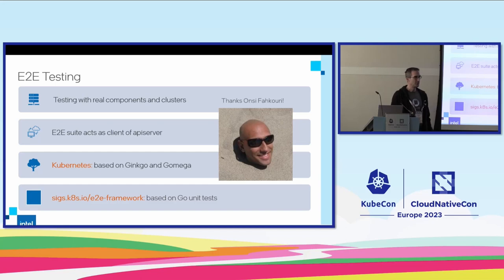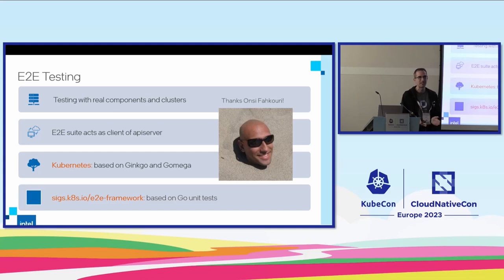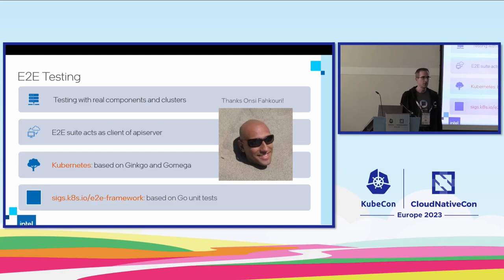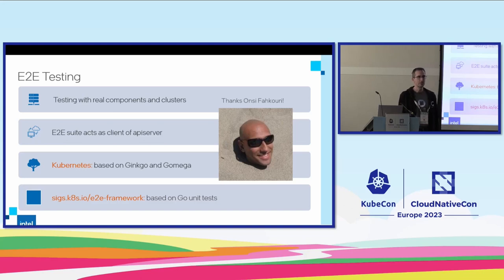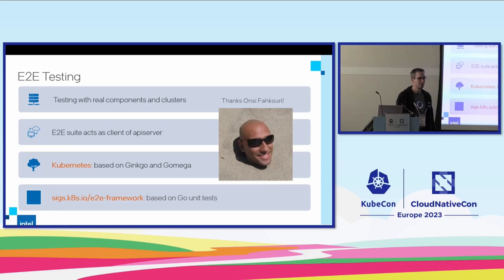I'd really like to give a huge thanks — perhaps a round of applause. Onzi Fakuri is the main author of Ginkgo and Gomega, and he's been extremely helpful, all of it in his spare time, to improve Ginkgo — in particular the major release version 2 — making it suitable for Kubernetes and addressing some of the long-standing concerns we had. We can't pay him, but we can really thank him.